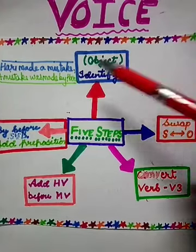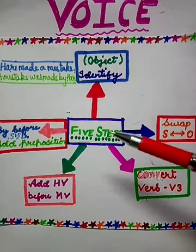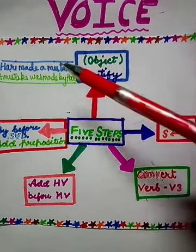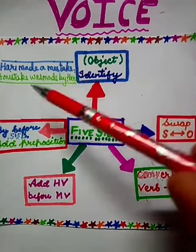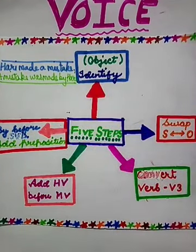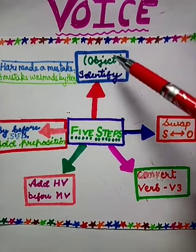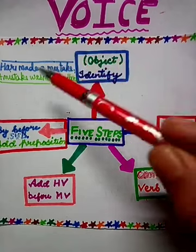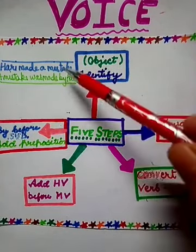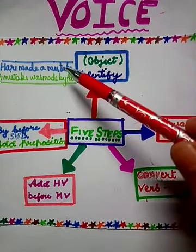Here are the five steps. By following these steps, you can convert active voice to passive voice. The sentence is: 'Hari made a mistake.' Changed to passive: 'A mistake was made by Hari.' Step one: identify the object. What is the object here? Hari made what? A mistake. So the object is 'a mistake.'